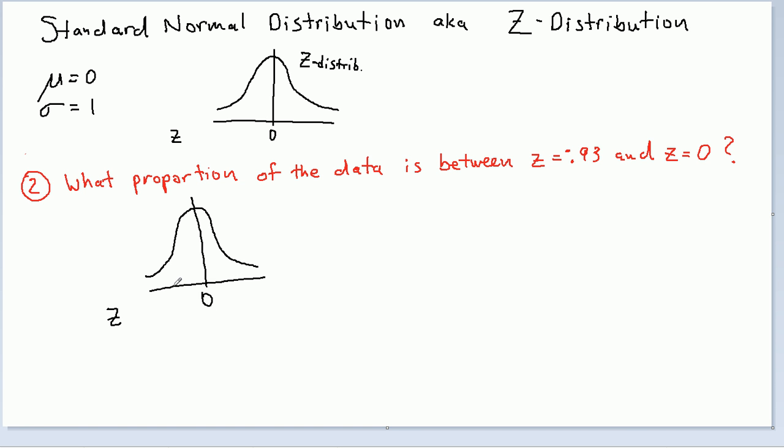I want from Z equals negative 0.93, so that's definitely to the left of 0, to 0. So what I'm going to end up shading is this area here. This area corresponds to what the question is asking me. So basically I just converted the question into a picture, and this picture will serve as my map to answer the question.